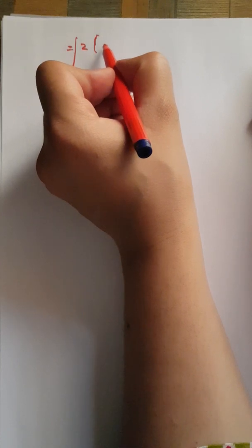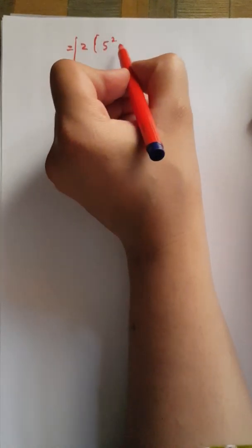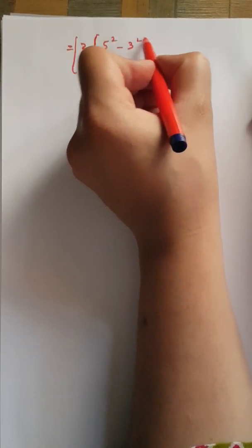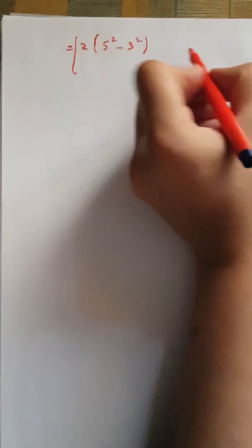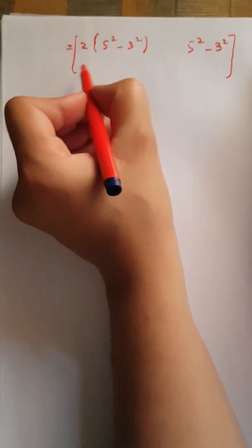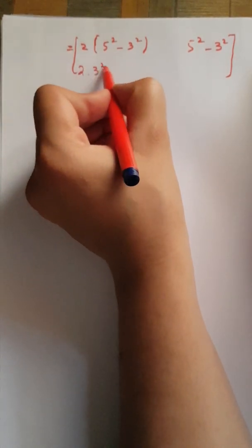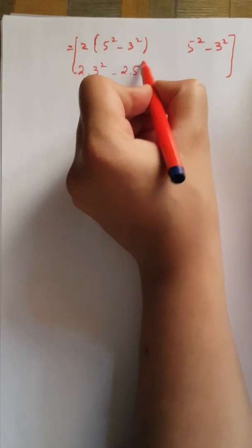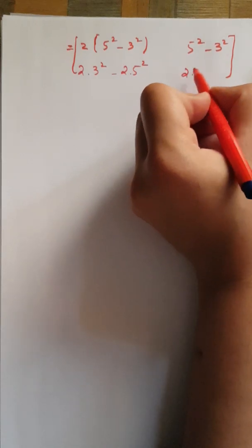Let's do that. We get 2(5² - 3²), then 5² - 3², then 2(3²) - 2(5²), and 2(3²) - 5².